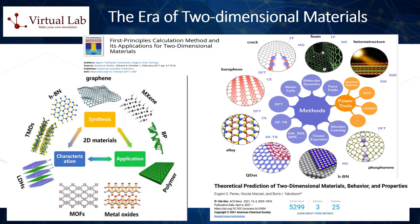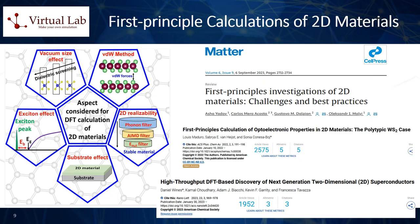The first-principles calculation method significantly contributes to research in discovering new two-dimensional materials. The first step in initiating the first-principles calculation of a crystal structure involves establishing the unit cell, which acts as a repeating unit. When performing calculations for two-dimensional materials, three-dimensional unit cells are still employed. This introduces a degree of freedom in determining the size of the lattice vector in the third direction, perpendicular to the two-dimensional plane, where the crystal structure lacks periodicity, leading to ambiguity in its determination.